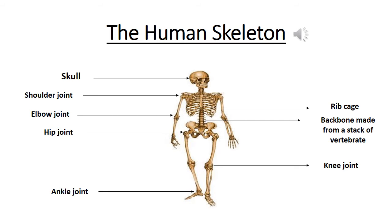Bones of the head: the head bones all together are called the skull. The skull is made up of a group of curved bones fitted together like a ball, which protects the brain, the eyes and the inside part of the ears.